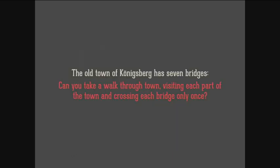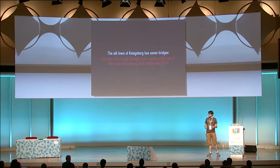He asked himself: the old town of Königsberg has seven bridges. Can you take a walk through the town, visiting each part and crossing each bridge only once? Does somebody know the answer? The answer is no. But this is not the interesting part — with this problem, he started to develop graph theory.